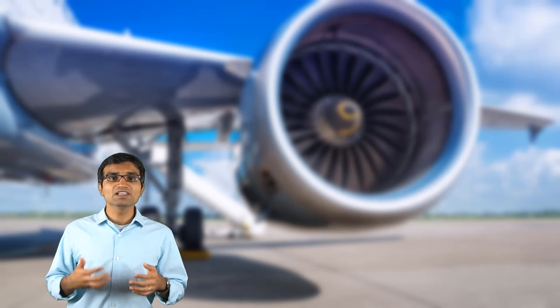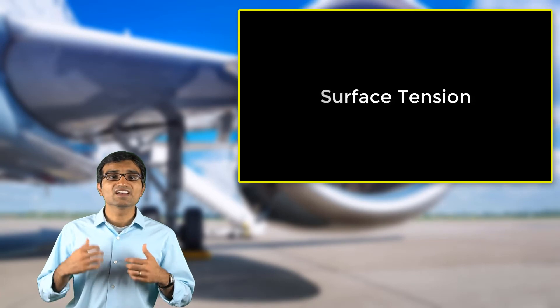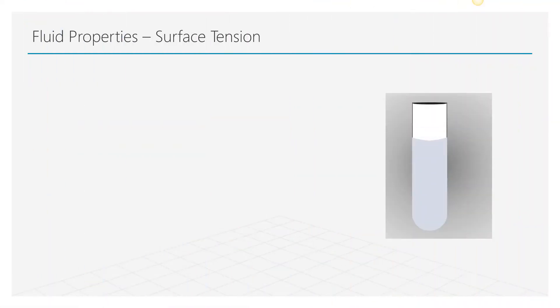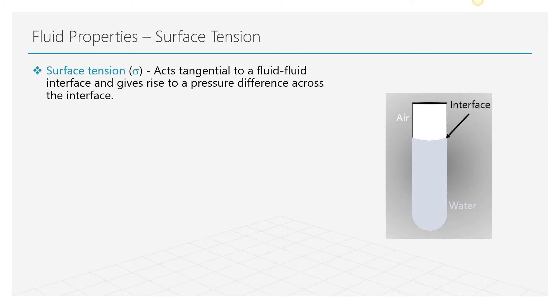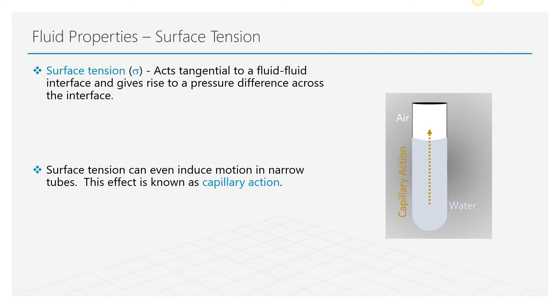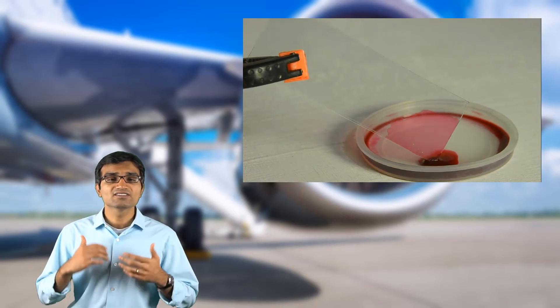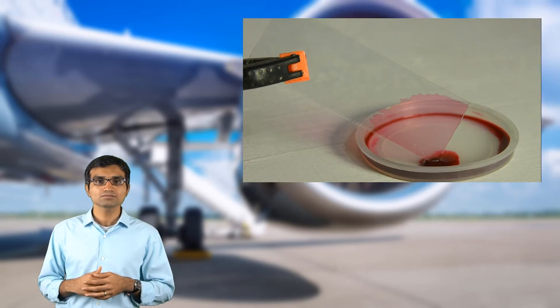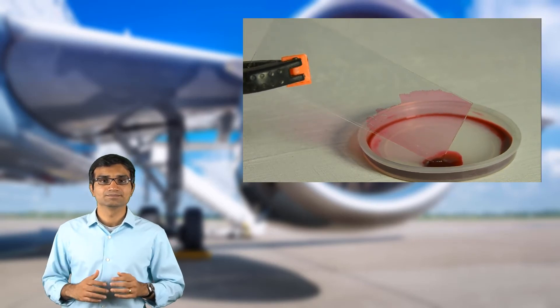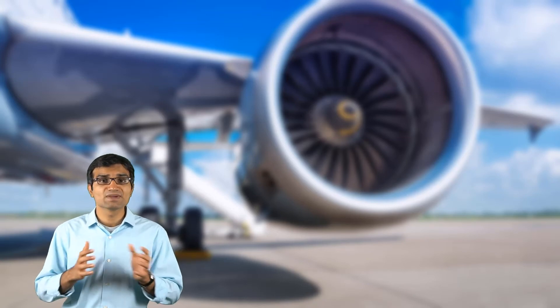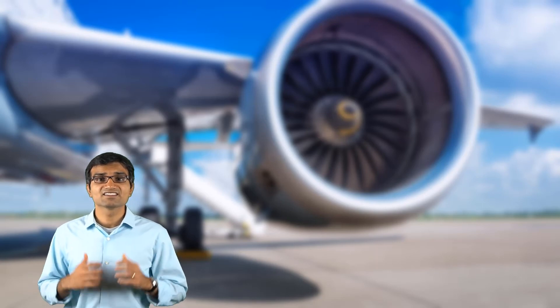This resistance force is commonly known as viscous drag. Surface tension is another important property which acts at the interface of two immiscible liquids. It is the tangential force at the fluid-fluid interface which eventually leads to a pressure difference across it. When a thin narrow capillary tube is inserted into a pool of liquid water, the surface tension force acting at the liquid-air interface causes the liquid to rise along the tube. This phenomenon is known as capillary action. Depending on the wetting property of the tube and liquid, we can have either a concave or convex meniscus. Concave meniscus leads to capillary rise, while convex meniscus causes capillary depression.